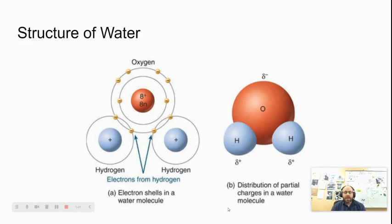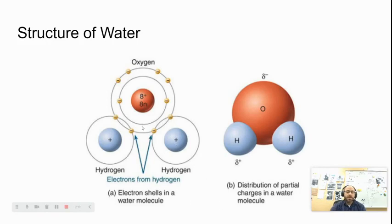Oxygen, because it has eight protons, causes those electrons to spend most of their time associated with that pile of eight. It would be like if you had a giant magnet on a wall and a small magnet on the wall, and you threw a handful of paperclips at it — the big magnet is going to attract the most paperclips. It doesn't mean that the electrons aren't sometimes near the hydrogens, but they spend most of their time near the oxygen.